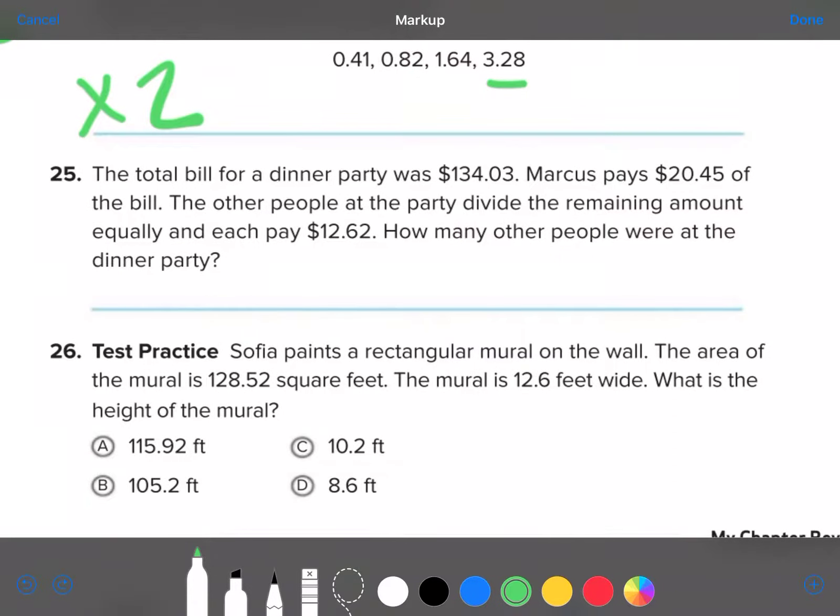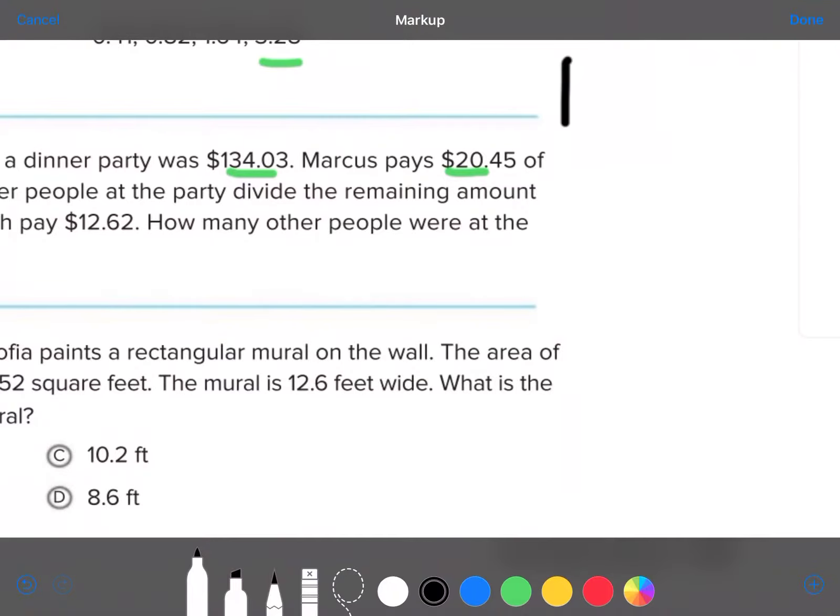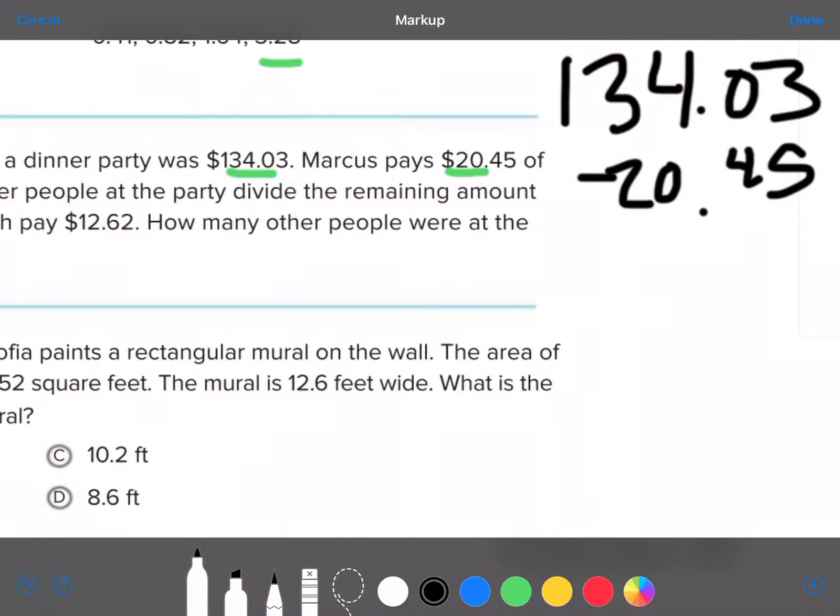Number 25. The total bill for a dinner party was $134.03. Marcus pays $20.45 of the bill. The other people at the party divide the remaining amount equally and they each pay $12.62. How many other people were there at the party? Okay. So, we're going to take this number and subtract that number. When we're subtracting, we have to line up the decimals. We're going to subtract for that amount. That's going to give us a number.